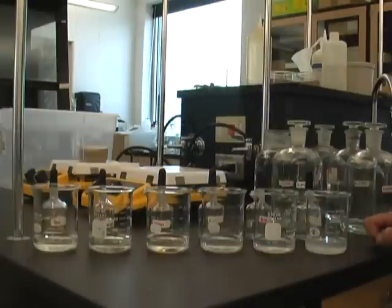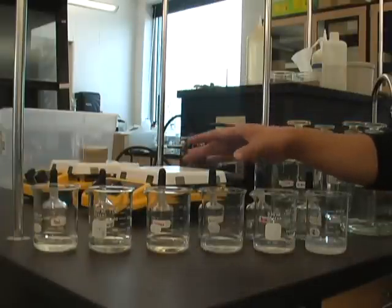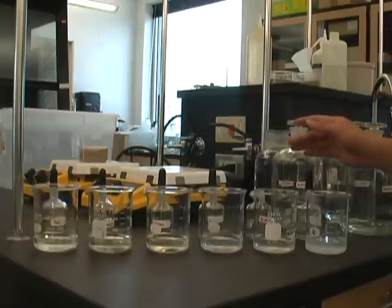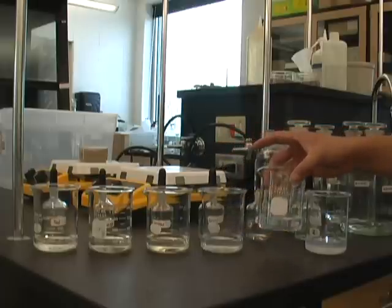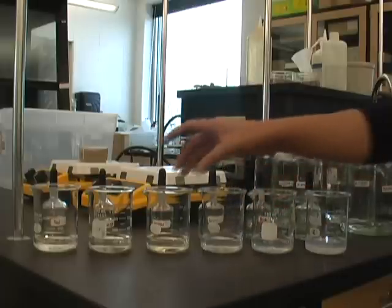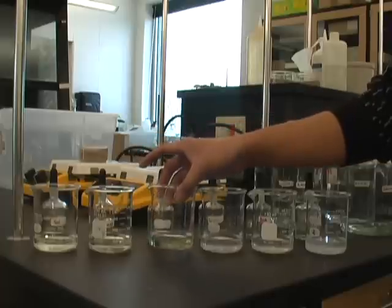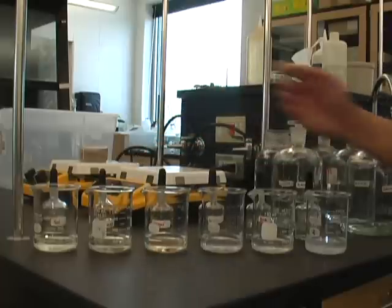This experiment deals with acids and bases. Here I have six beakers that have already all been added base indicators, and the liquid inside them is hydrochloric acid, which is an acid. That's why it still stays clear, because there's no base which the base indicators would indicate.